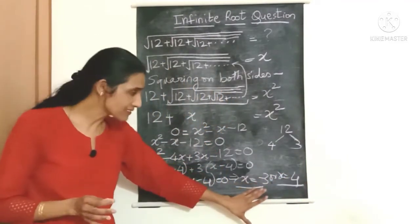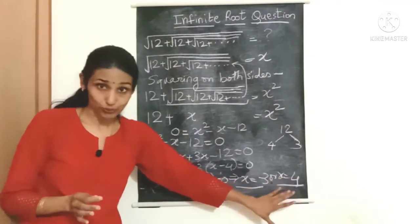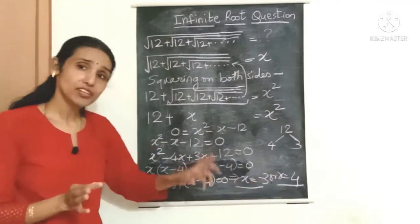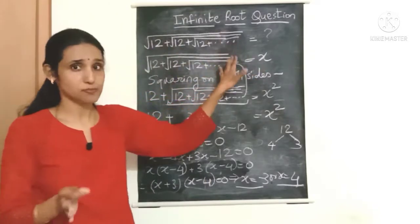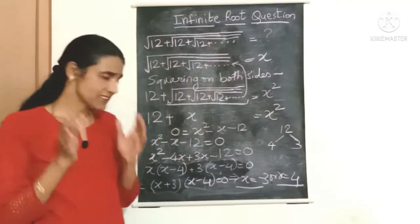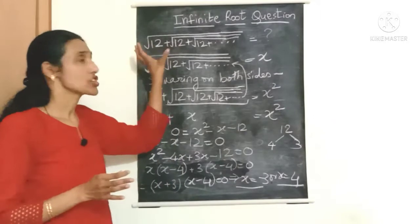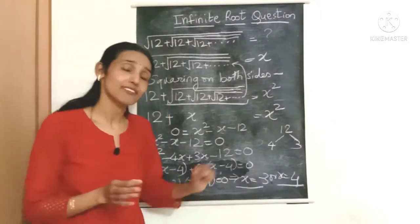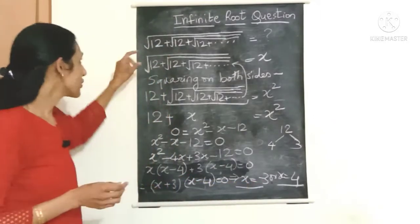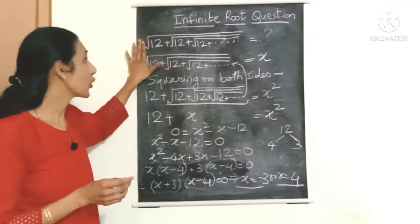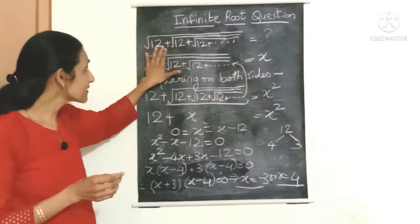So we got two values of x. Either x is minus 3 or x is equal to 4. Now what is this x in the first place? Yes, it is this entire expression. Now let's just think: can this expression be negative? Can it take the value minus 3?